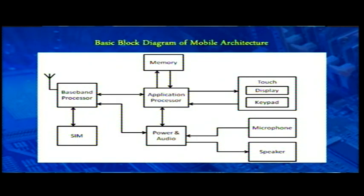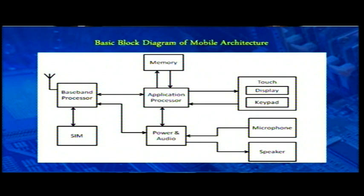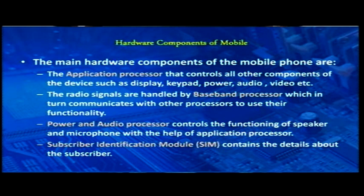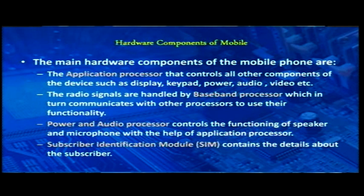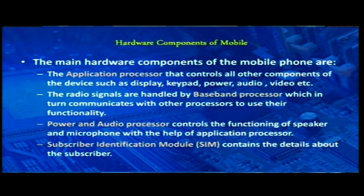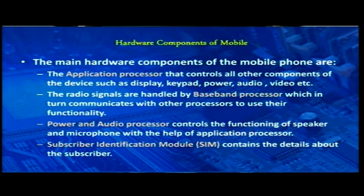In mobile architecture there are key processors: a baseband processor, an application processor, a power management processor, and a SIM (Subscriber Identity Module). The application processor controls different application software — display, keypad, power, audio and video controls. The baseband processor handles radio signal communications, while power and audio processors control microphones and speakers.